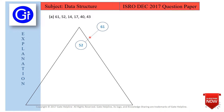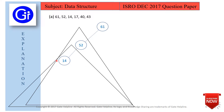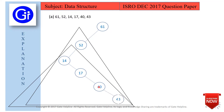Next we have 14. Since 14 is less than 52, it will come on the left of 52. Next we have 17. Since 17 is less than 61 and 52 but greater than 14, it will come on the right subtree of 14. The next node is 40. Since 40 is less than 61 and 52 but greater than 14 and 17, it will come on the right subtree of 17. Next, 43 is less than 61 and 52 but greater than 14, 17, and 40, so it will come on the right of 40. Option A sequence is possible.